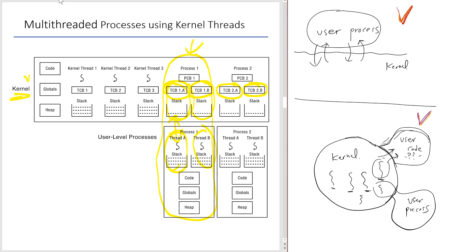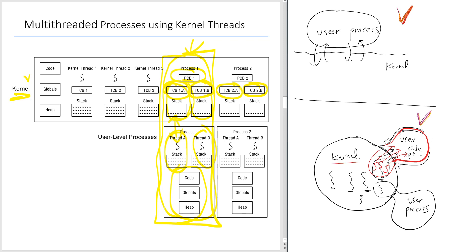Individual processes can now have multiple threads — two, three, or 100. There's a separate structure, the PCB (process control block), which describes process-related information, mainly the address space, which is shared among threads. With this multi-threaded process using kernel threads model, a single user process can allow multiple threads — say three — to venture out within the same confines of the process concept. The kernel is the one that manages the threads.